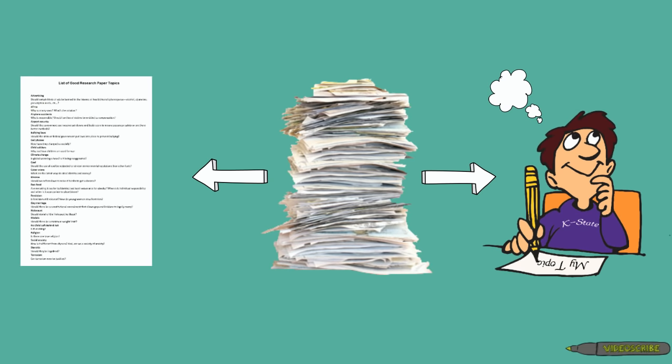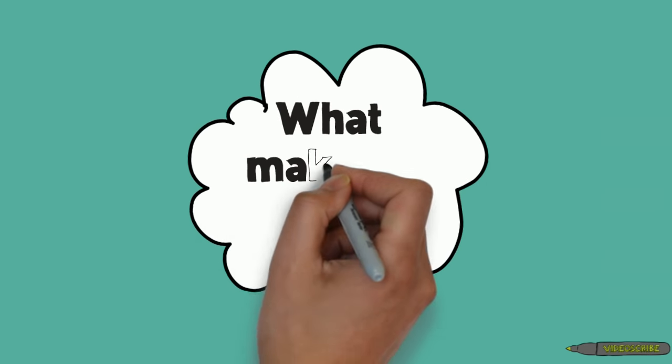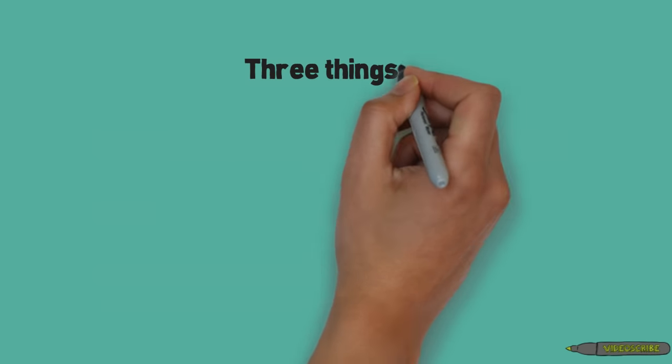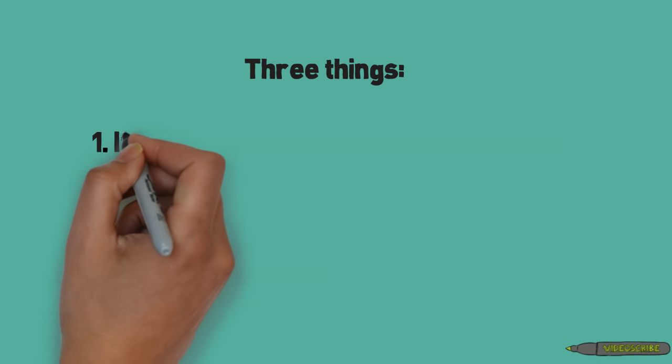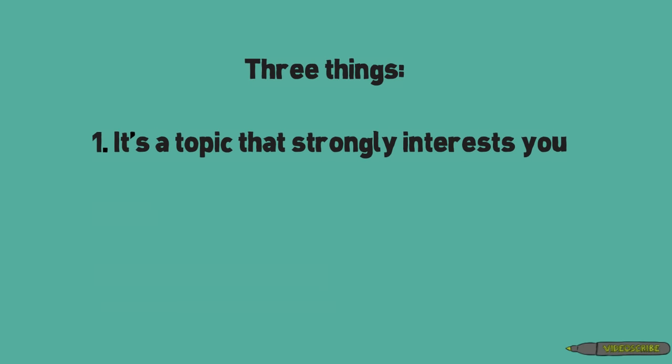So what can you write about? Let's first answer the question: what makes a topic really good? Three things worth mentioning here. First, it's a topic that strongly interests you. This is very important. Make sure that the topic you pick is a topic that interests you, fascinates you, that you want to talk about. There's nothing worse than spending a lot of time writing about a topic that bores you.